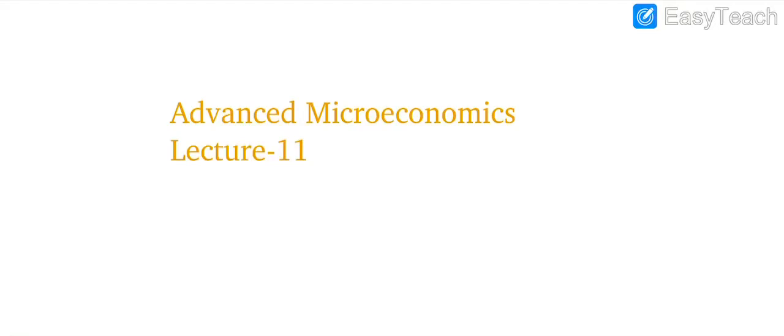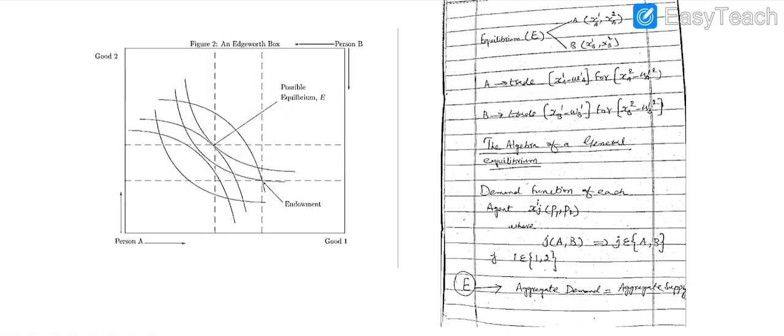Bismillahirrahmanirrahim, Assalamu Alaikum. Welcome to Advanced Microeconomics Lecture 11. In the last lecture we discussed the concept of the Edgeworth box and Pareto efficient allocation.